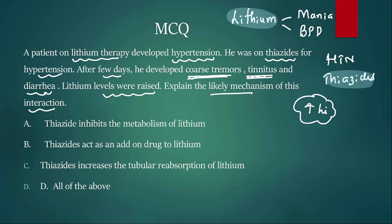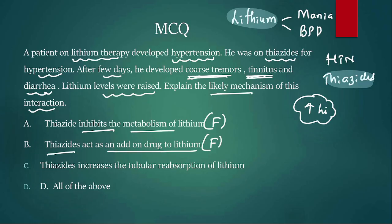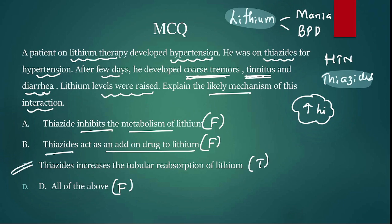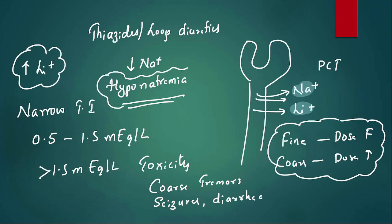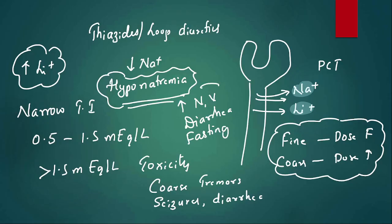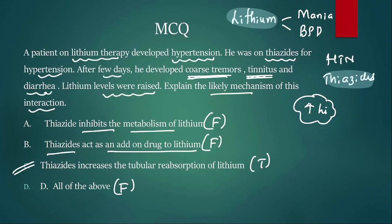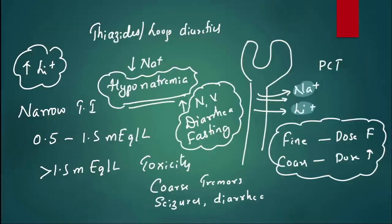Evaluating the options: thiazides do not affect lithium metabolism, they don't act on CNS, but they do increase tubular reabsorption of lithium — that is the correct mechanism. Also, anything causing hyponatremia (nausea, vomiting, diarrhea, fasting) can lead to lithium toxicity in patients on lithium. The answer is C.